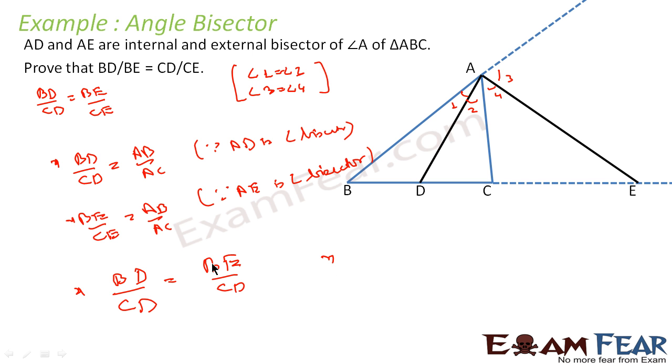Or the same thing, I will just change the position because this should come here. This becomes BD by BE, that is what the question is asking me to do, is equal to CD by CE. And that is what I am supposed to prove. We just observed that BD by BE is something which we do not look for. BD by CD is something we know, the formula we know, and similarly BE by CE also we know.